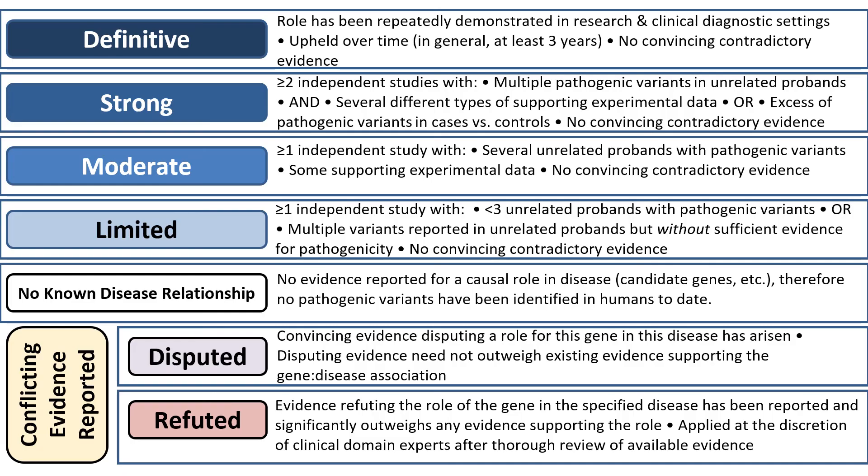In the ClinGen clinical validity curation process, there are six classifications used to qualitatively describe the strength of evidence documenting a gene disease association. These terms do not reflect the effect size or relative risk attributable to variants in a particular gene and should not be used as such.